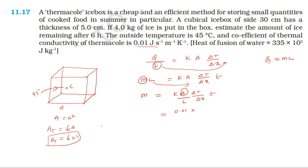Mass of ice melted in time t. Area, surface area is 6 × a², 6 × a². The side is 30 cm, so in meters that's 30 × 10⁻² whole squared. ΔT: outside temperature is 45, inside temperature 0, so 45 - 0. Time is 6 hours...